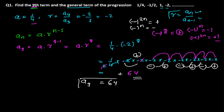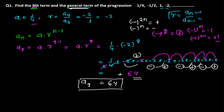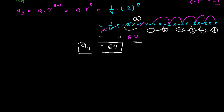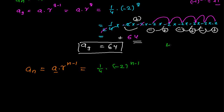Now we find the general term, which is the generalization for the nth term. Our nth term is a·r^(n-1). The first term is 1/4 and r is -2, so we have (1/4)×(-2)^(n-1). Notice that 4 equals (-2)×(-2), which is (-2)^2.